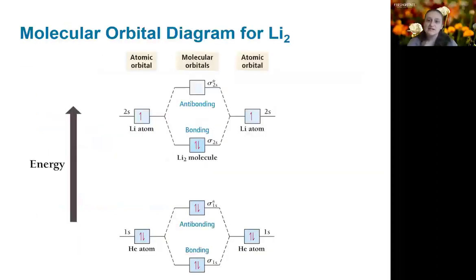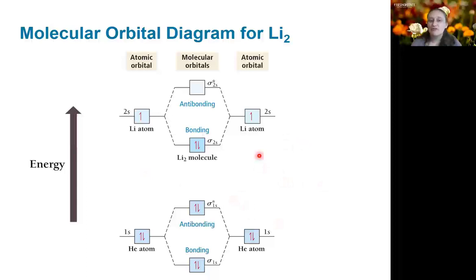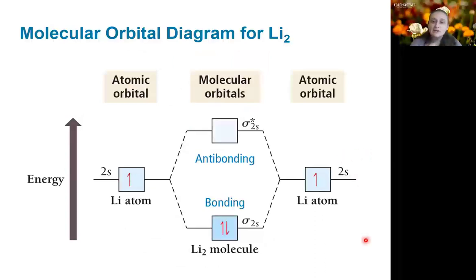Now let's continue looking further in the periodic table. In the case of lithium, we have an atomic configuration of 1s2, 2s1. So the valence electrons are actually in the 2s level. The core 1s electrons are filling both the bonding and anti-bonding orbitals and can safely be ignored. The 1s electrons are also much lower in energy and have no effect on the 2s electrons. The two lithium atoms each have one electron in an s level, and when they form their bonding and anti-bonding levels, the bonding level is what is filled. So we would determine that the lithium dimer has a bond order of 1. This will occur if lithium is in the gas phase, although at room temperature lithium would be a solid and have metallic bonding rather than covalent bonding.